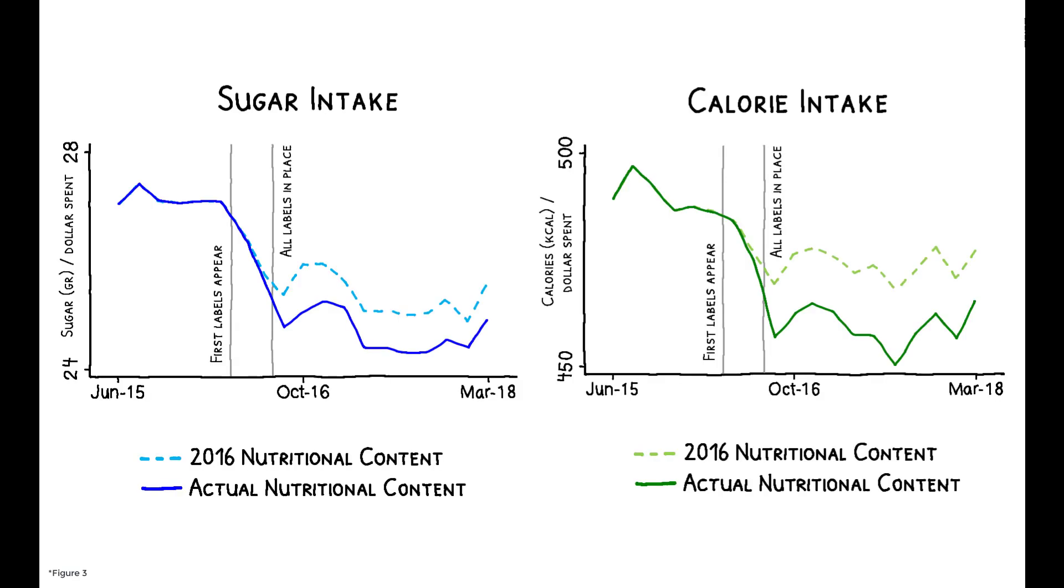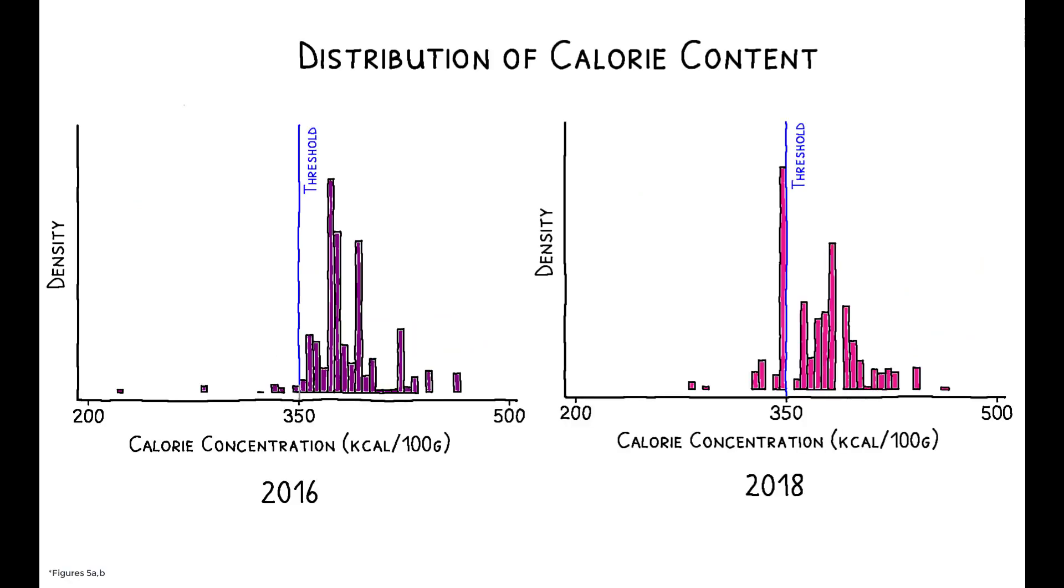Turning to the supply side, recall that part of this decline in sugar and calorie intake appeared to be driven by changes in products' nutritional content. And, indeed, suppliers responded to the Food Act by reformulating their products to avoid receiving a label.